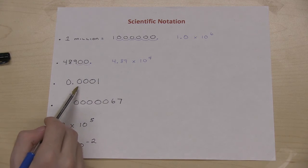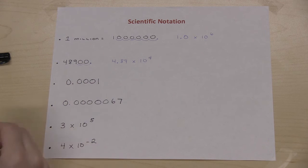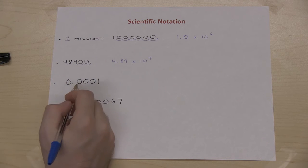Now I have this number, 0.0001. Once again, I move the decimal point until I get to a number between 1 and 9, and in order for me to do that, I will have to move the decimal to the right.